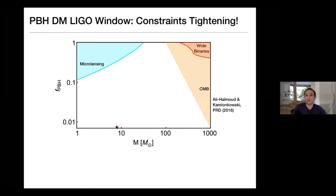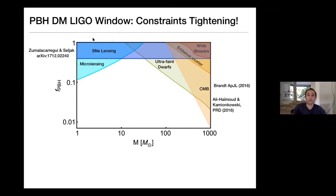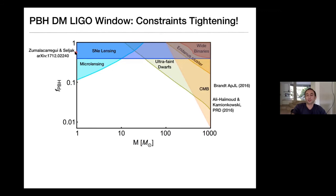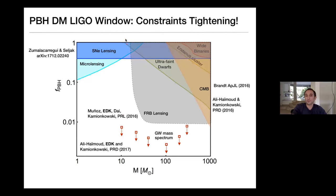Looking at the LIGO window again: it's starting to close. We now have dynamical constraints from the density profiles of ultra-faint dwarfs starting to creep into this window. We have bounds on weak-lensing statistics on Type Ia supernovae, reaching around one for which you can infer robust but weak bounds on the fraction of dark matter. We have the indirect constraints from just the merger rate — shown in dashed because they're uncertain. And we have this prediction for bounds from fast radio burst lensing — also dashed because we don't have it yet — but you can see this window is closing.